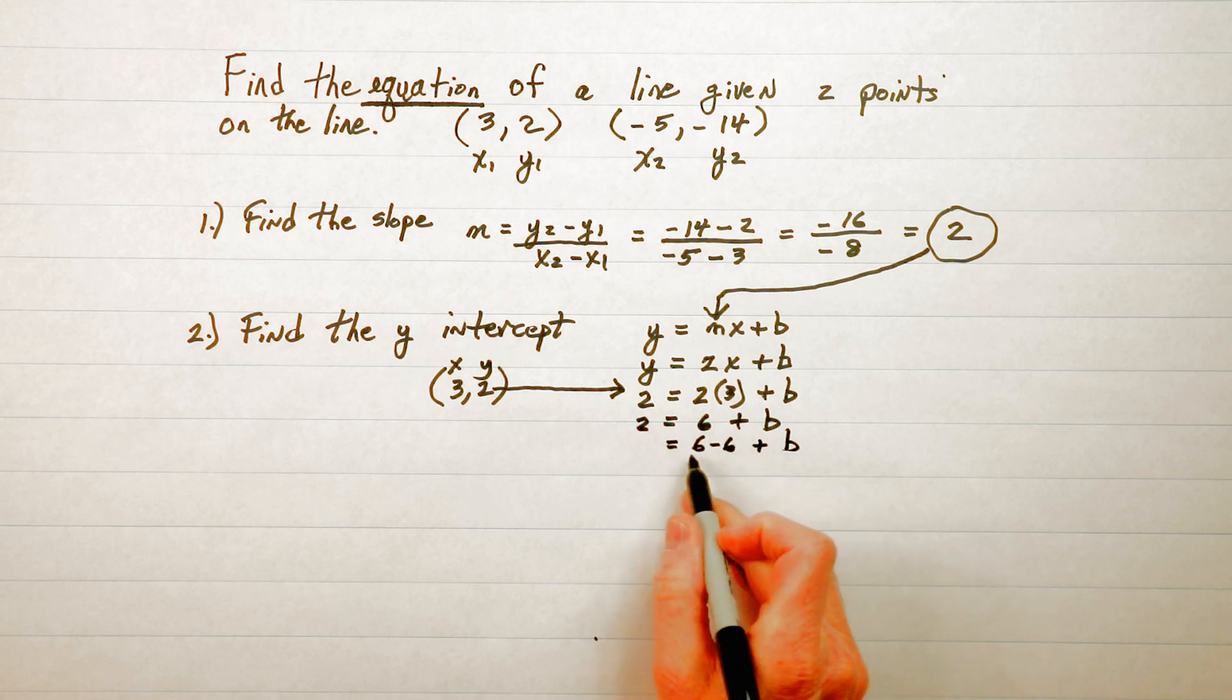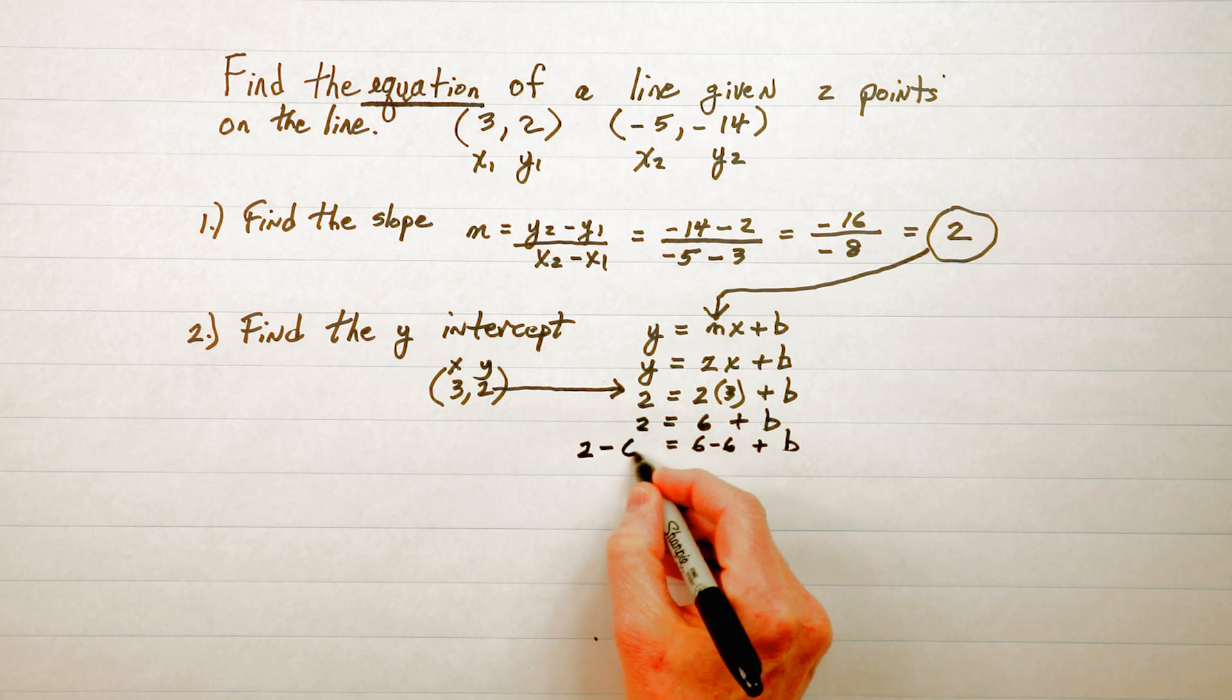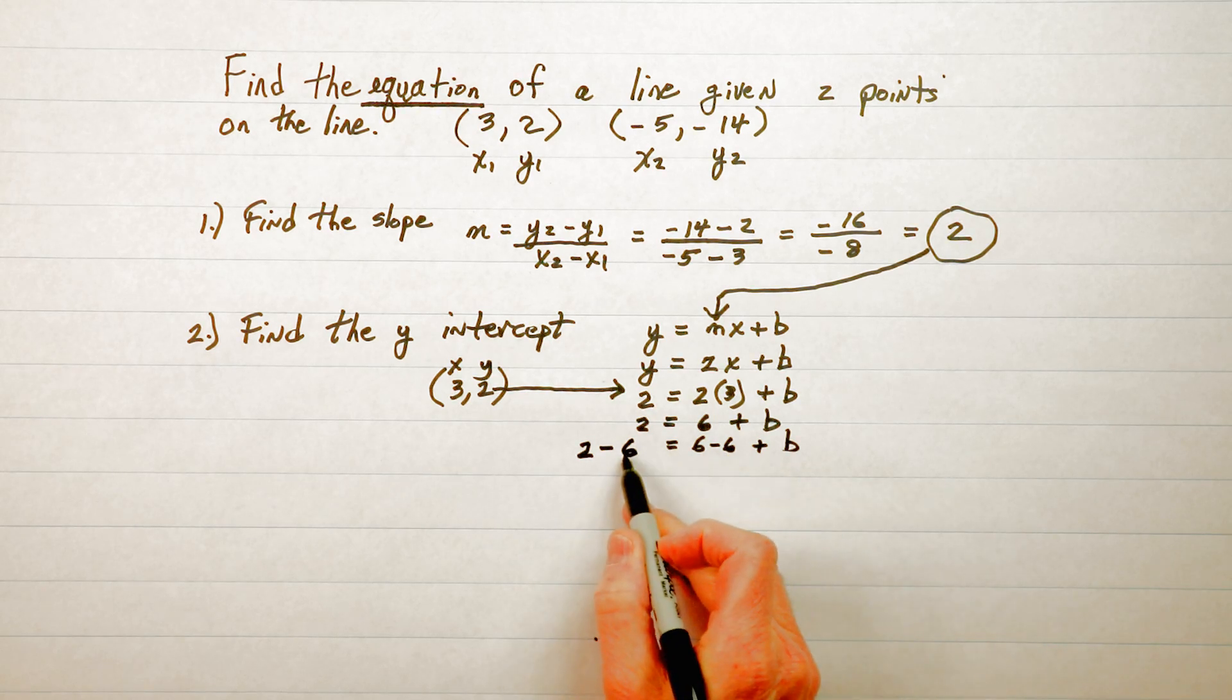If you take away 6 from the right side of the equation you have to take away 6 from the left side of the equation. Take away 6, take away 6.